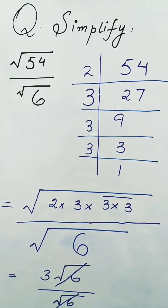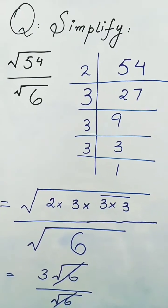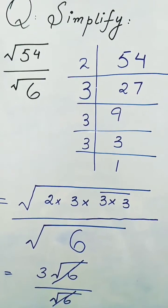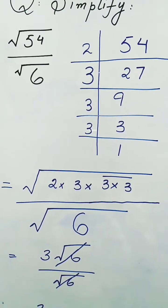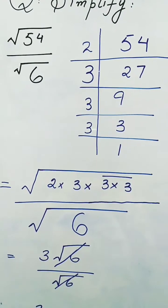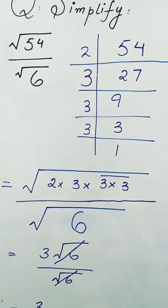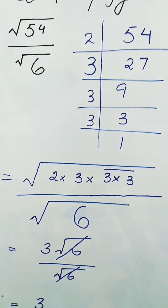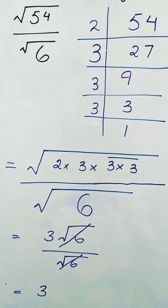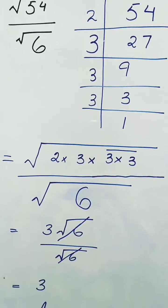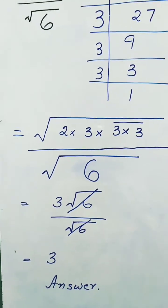Here we have a question: square root of 54 divided by square root of 6. First, we find the factors of root 54, which are root of 2 × 3 × 3 × 3. As it is a square root, the pair of 3 comes out, and we are left with root 6 in the root, which is divided by root 6 in the denominator. The answer comes out as 3.